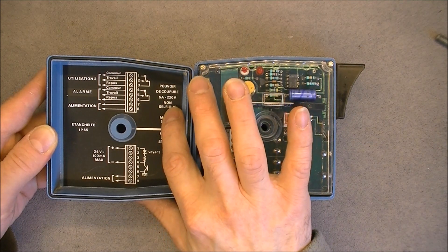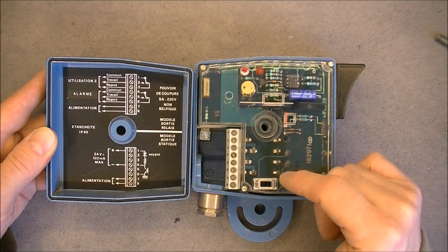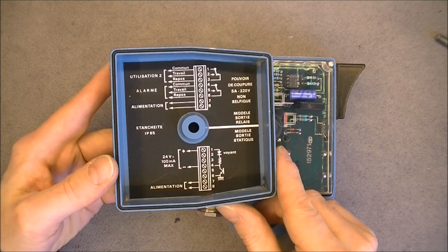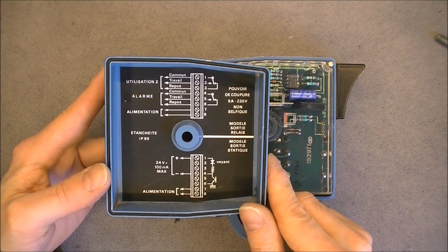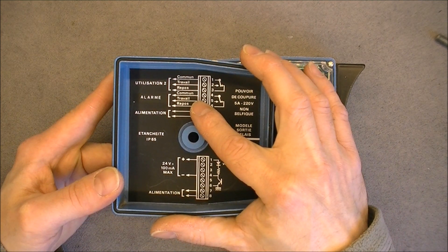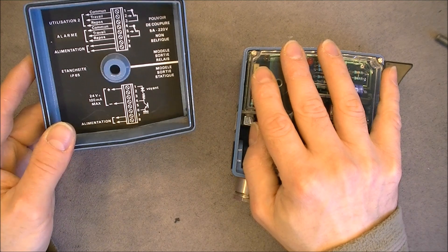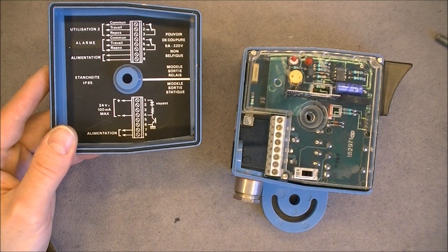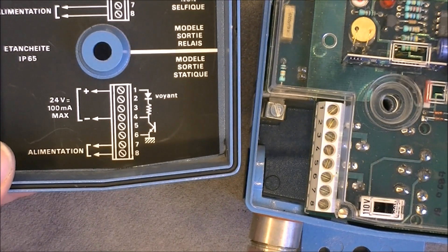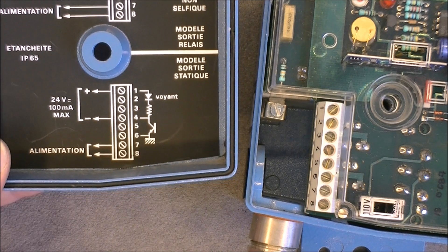The cutoff power is 5A, there must be a relay somewhere I guess. IP65 rated and it seems we have a set of two relays. There is also some kind of a bit of schematic here showing how the LED status light is connected.